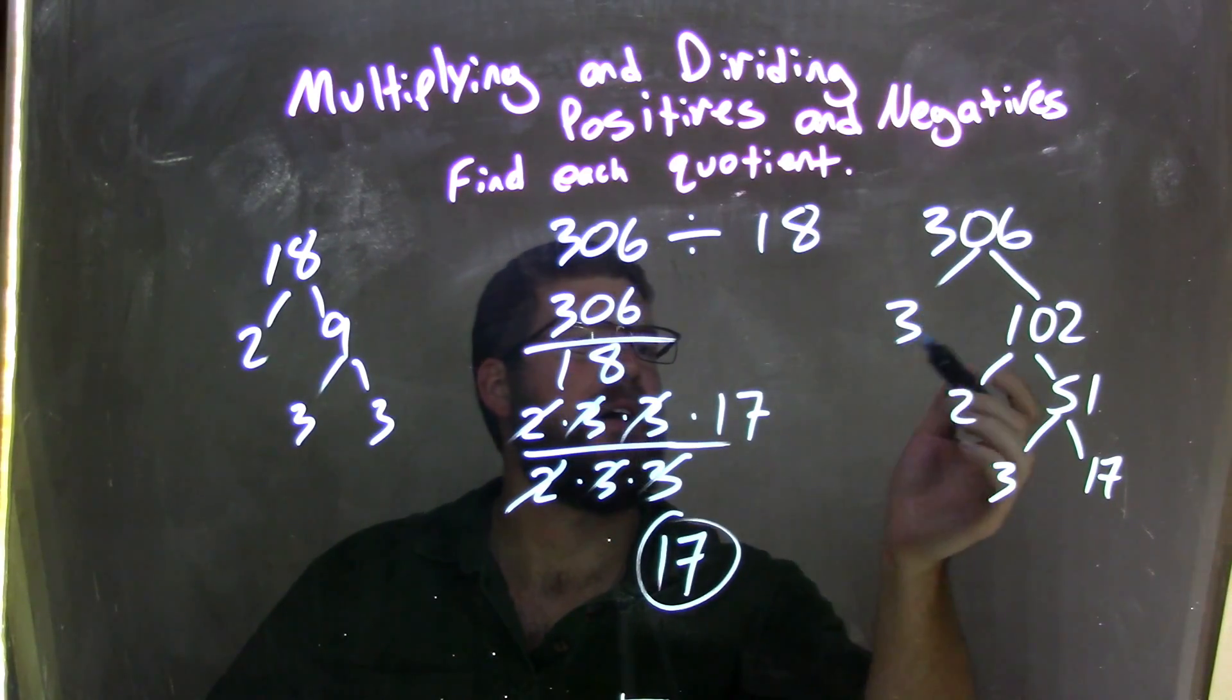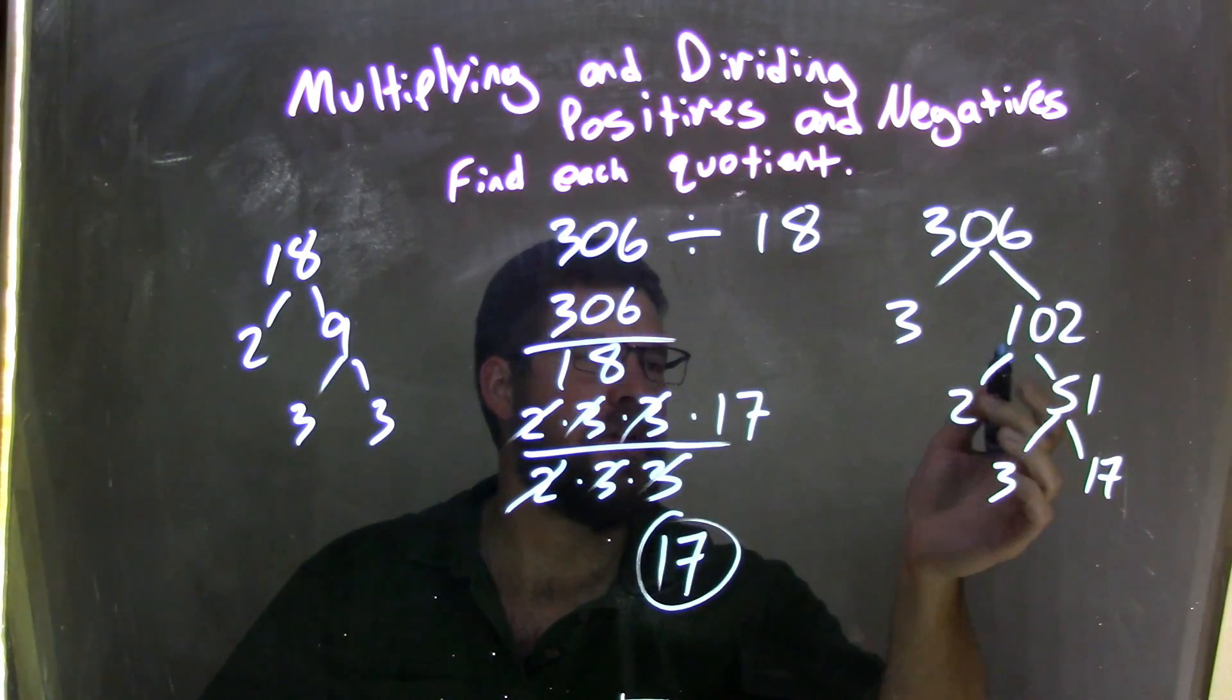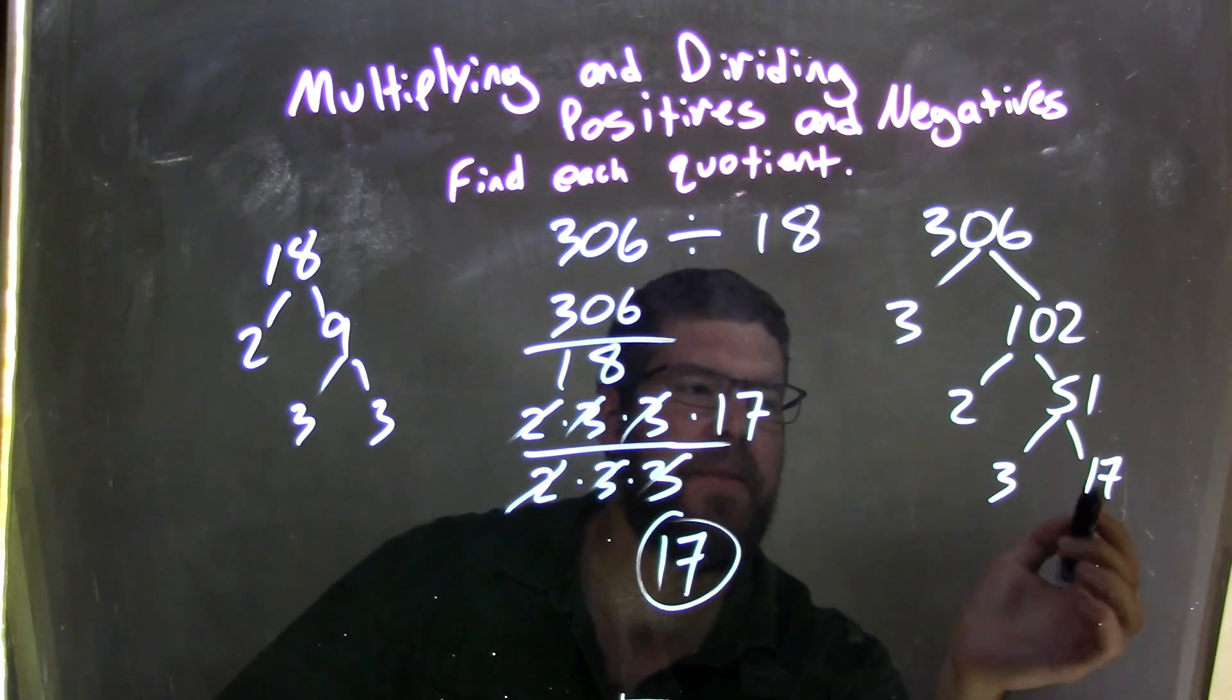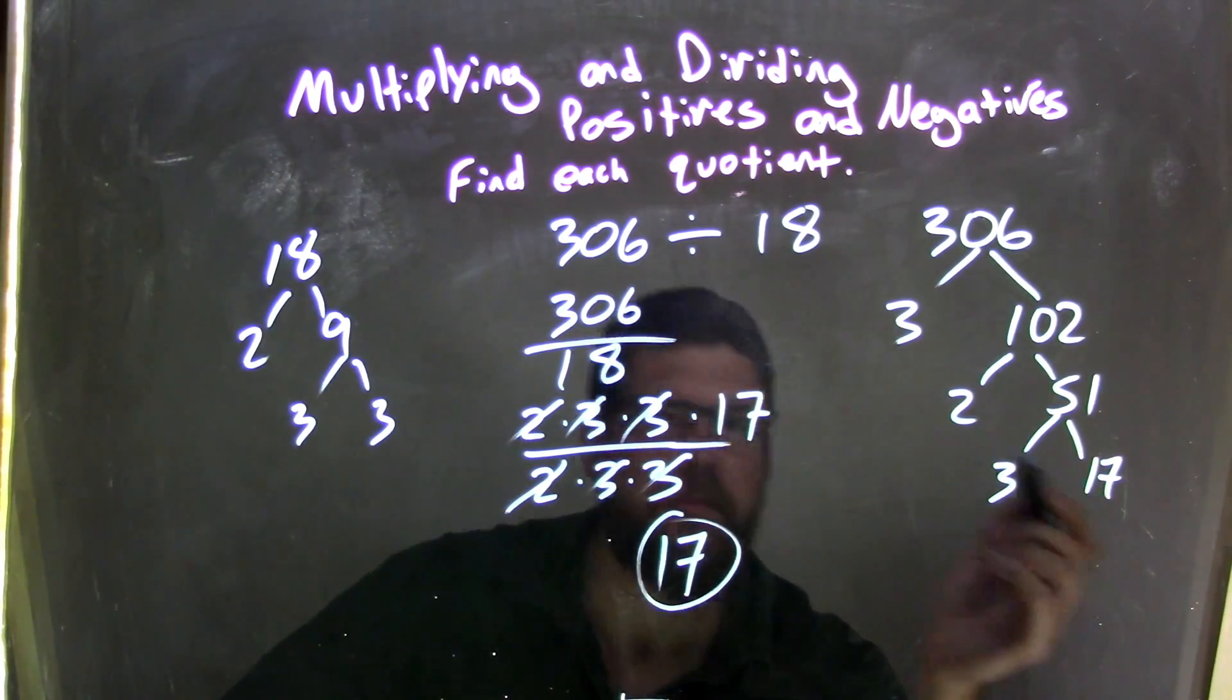3 goes into 306, 102 times. 2 goes into 102, 51 times, and 3 times 17 is 51, and now we're done with the prime number.